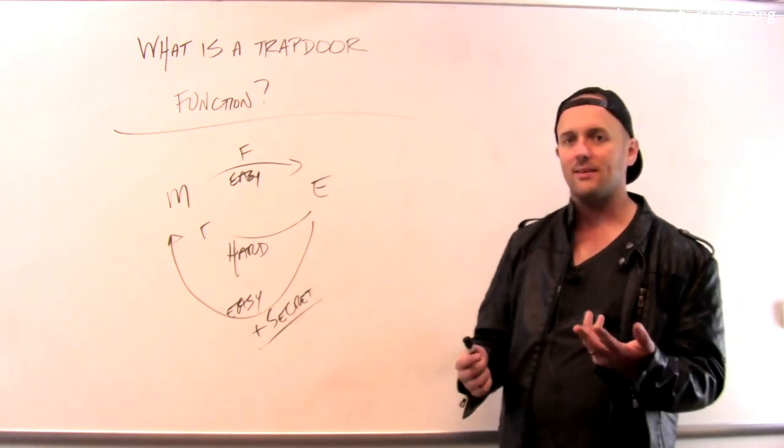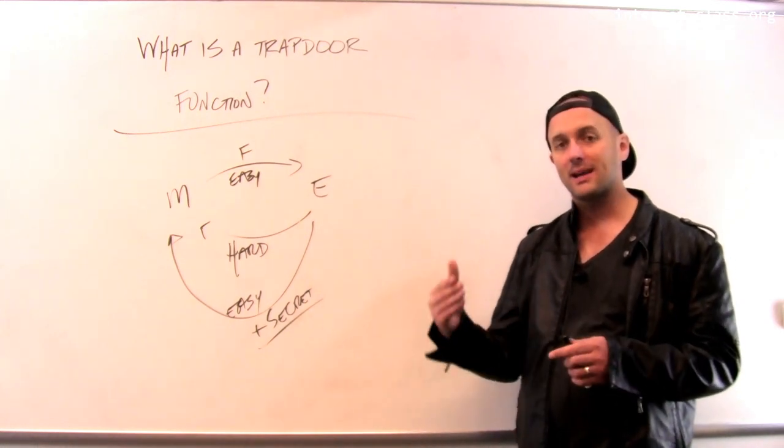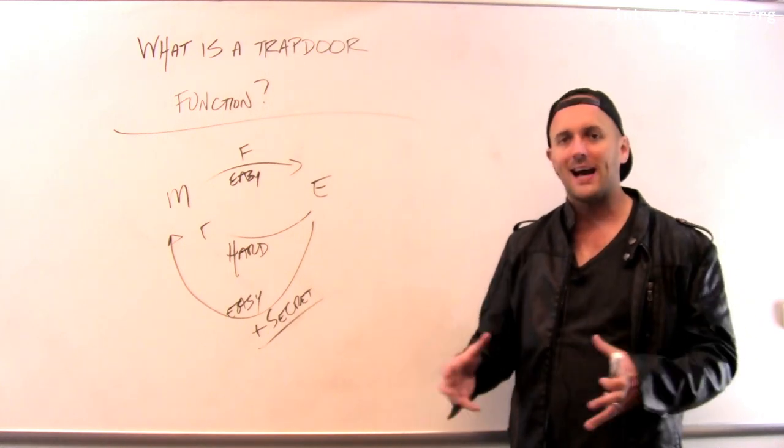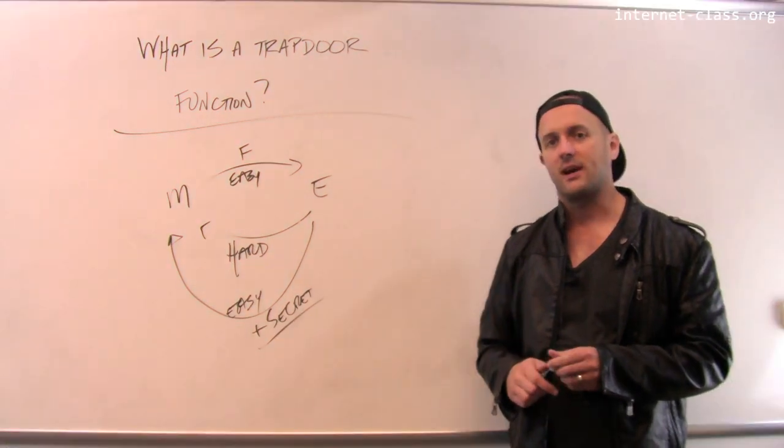And trapdoor functions are the basis for what's known as public key cryptography or asymmetric cryptography that is really, in some ways, the backbone cryptosystem that holds the entire internet together.